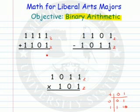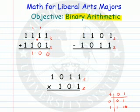So 1 plus 1 is 10 — that's a 0, carry a 1. 1 plus 1 is 10 again — that's a 0, carry a 1. 1 plus 1 plus 1 is 10 plus 1, which is 11 — put down a 1, carry a 1. 1 plus 1 plus 1 more is 11. So the answer in base 2 would be 11100 base 2.